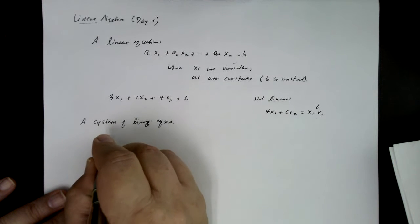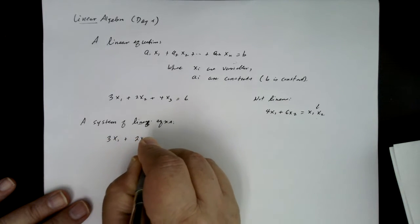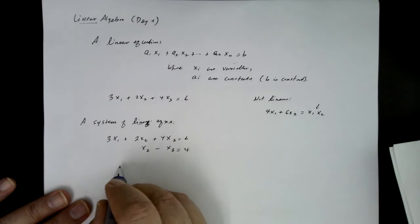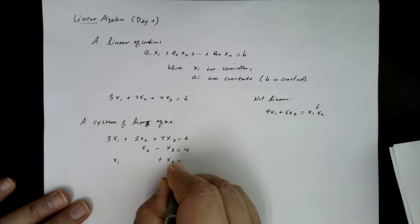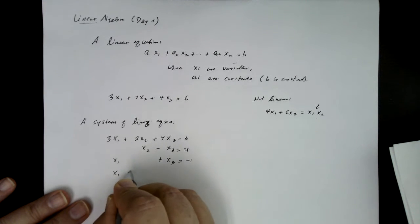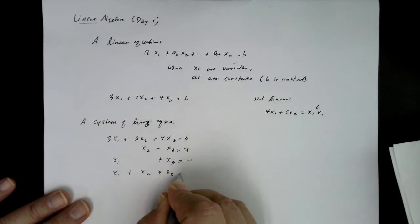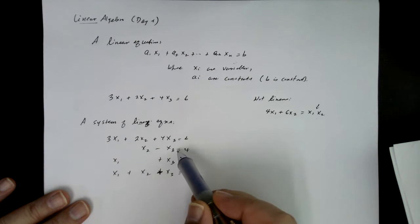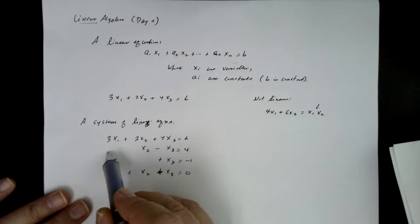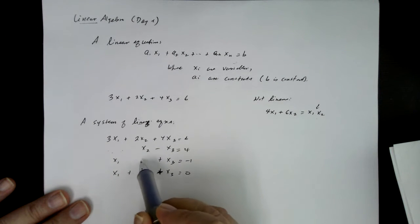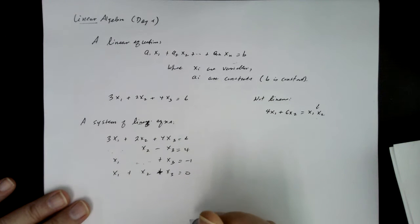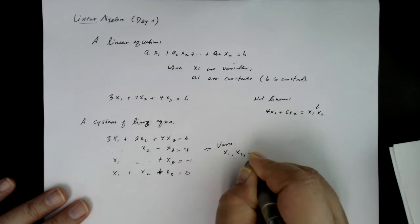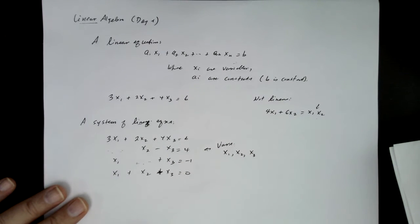So we might have, for example, 3x1 plus 2x2 plus 4x3 equals 6, and then maybe x2 minus x3 equals 4, and then maybe x1 plus x3 equals negative 1. Let's put in one more, x1 plus x2 plus x3 equals 0. So here's the system of linear equations, and notice that even though this equation doesn't involve x1, we think of that equation as having like a 0 times x1, and similarly here, this would be like a 0 times x2. So the set of variables would be x1, x2, and x3 for the entire thing.